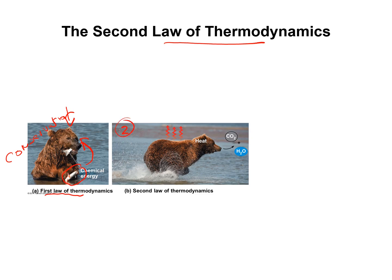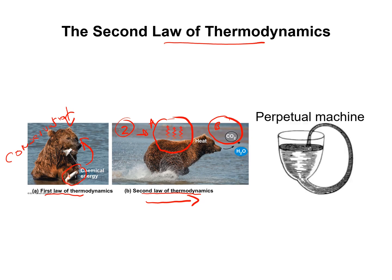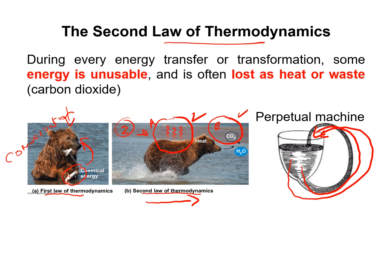The second law of thermodynamics states that every time there is an energy transformation, an unusable part of that energy is released and lost — as heat or as waste such as CO₂. This means that through every energy transformation, the entropy of the universe increases. As a result, perpetual machines — which create a feedback loop that avoids energy waste — do not exist according to current science. There is always a loss of energy.